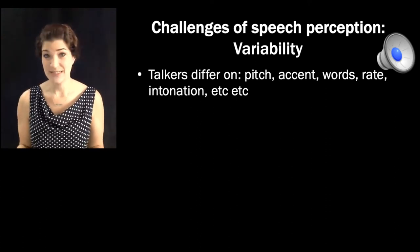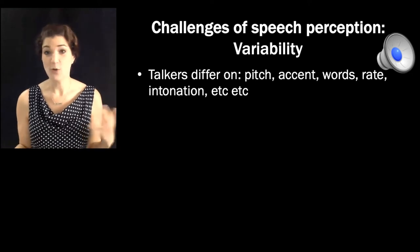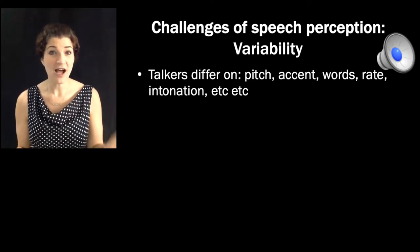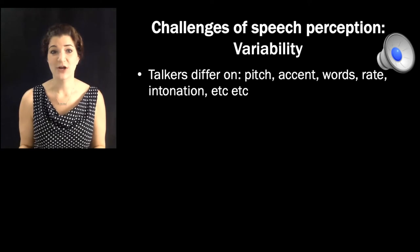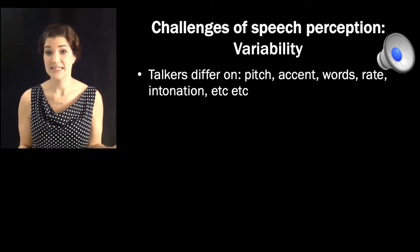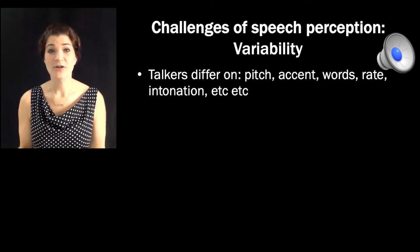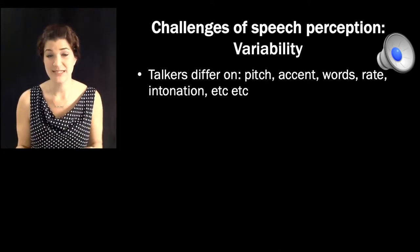So when you hear a Minnesotan say 'beg', you have to parse our wonderful vowels and understand that that's the same vowel as a non-Minnesotan saying 'bag', even though they sound very, very different. Now, even within a talker, speech can be highly variable. So here are just a few of the ways that my kids can say 'mama'. So somehow I have to figure out that all of those things map onto the same representation in my mental lexicon.